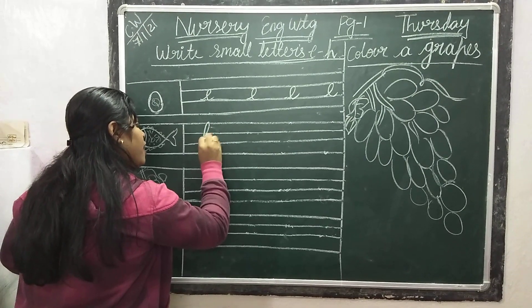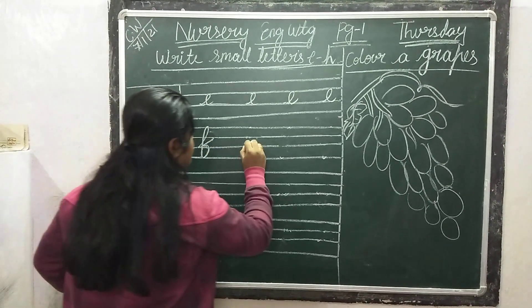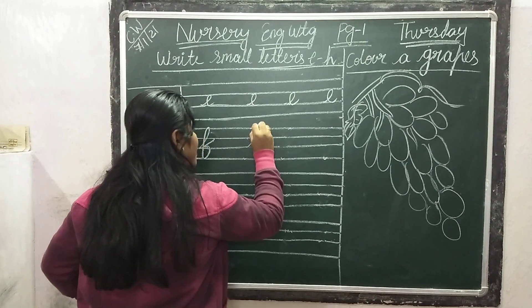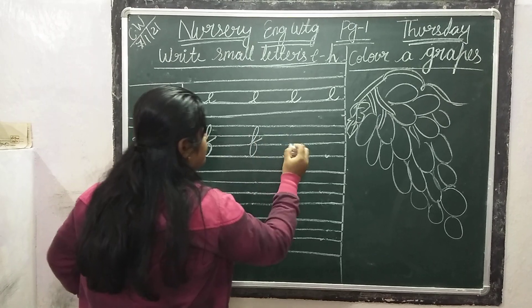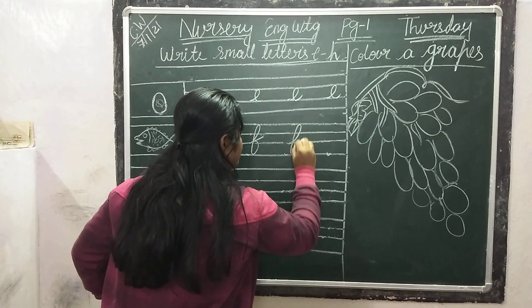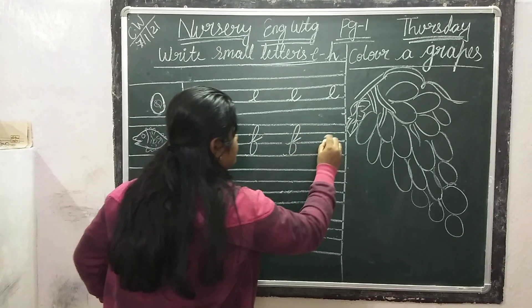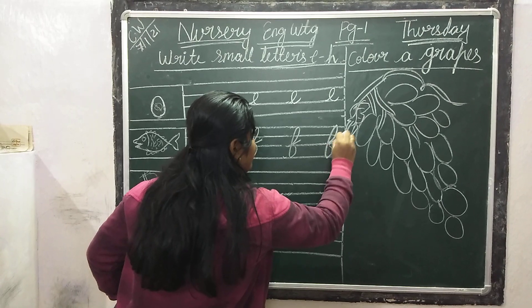F for fish. Small f. F for fish. F for fish.